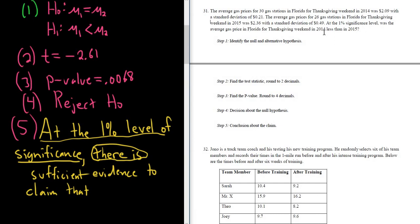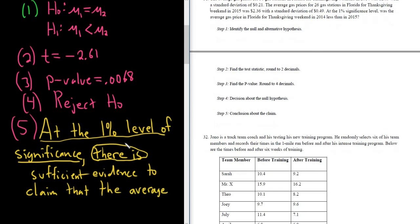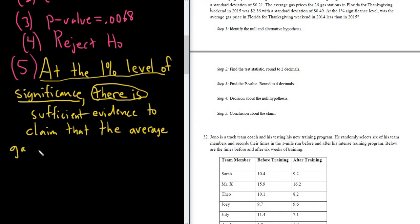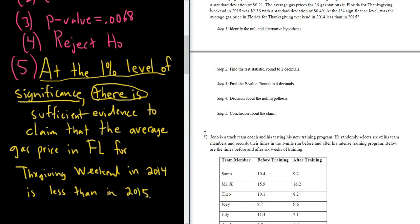And then just go to the last sentence. So I guess it would be here. The average gas price in Florida for Thanksgiving weekend in 2014 is less than in 2015. So that the average, give myself some more room here. Gas price in Florida. I'll abbreviate it for Thanksgiving. I'll save some writing. Weekend. I want to abbreviate it weekend. In 2014. Is less. So let me make sure it's a correct sentence here. That the average gas price in Florida for Thanksgiving weekend 2014 is less than in 2015. And that would be the full solution.